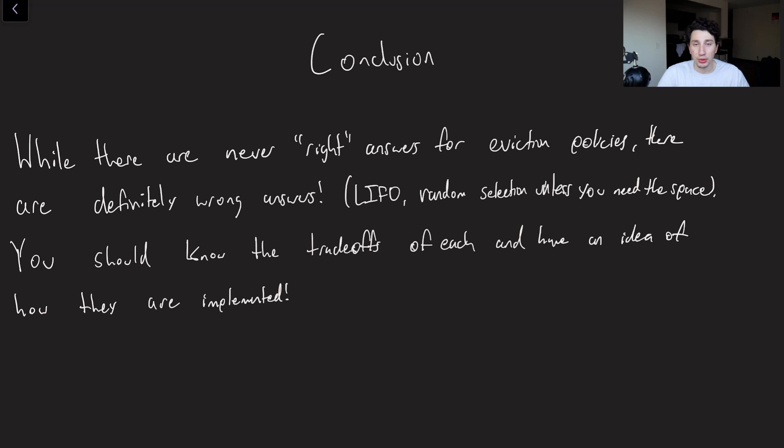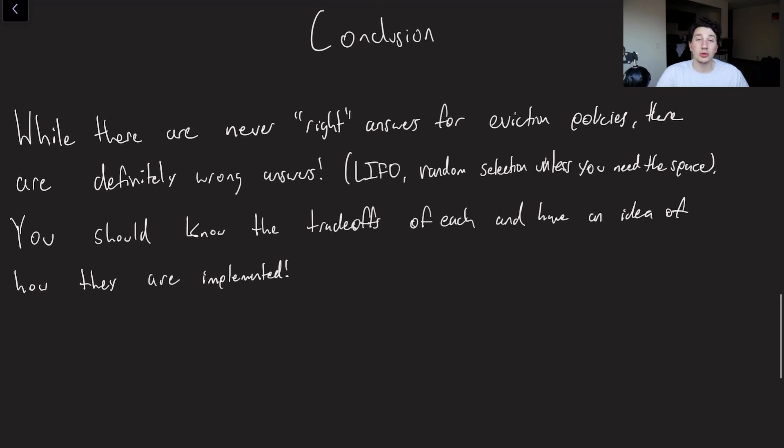Random eviction policies, probably also pretty bad, though they do come with the advantage that you don't actually have to have any extra metadata about your cache data. So maybe if you're really cramped for space, doing things randomly could potentially be useful. But just generally speaking, you should know the tradeoffs of these approaches, a general idea of how to implement them, because at least for LRU, it could definitely come up in an interview. And of course, when you ultimately want to be using them, which is going to depend on your use case.